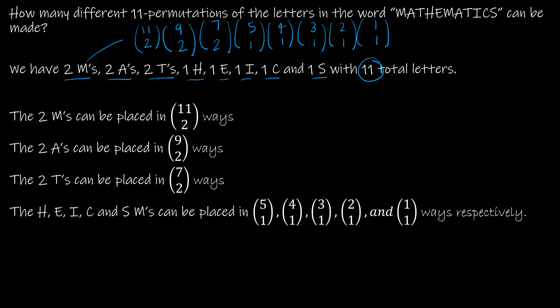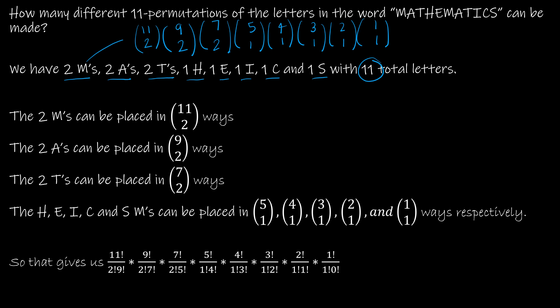So really what we're looking at is 11 choose 2, times 9 choose 2, times 7 choose 2, times 5 choose 1, and so on. Now if I multiply those out — because these are different events that are happening — I want you to notice that the 9 factorial, 7 factorial, 5 factorial, 4 factorial, 3 factorial, and so on all cancel. So what I'm left with is in the numerator 11 factorial, and in the denominator, how many times each object occurred. So I've got three 2-factorials, and then 1-factorial five times.